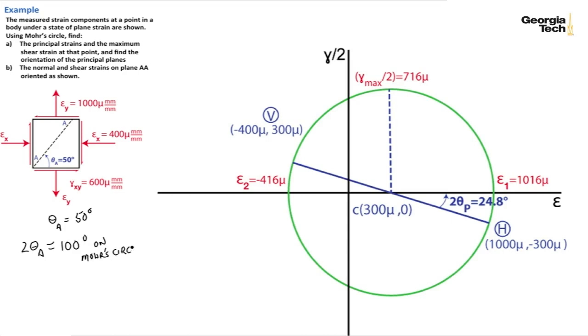If I draw that, we're going to go 100 degrees, and so we're going to end up somewhere up here. This is 2 theta sub A. Remember from last time we did this approach on Mohr's Circle for plane stress, we'll call this angle phi. We find phi equals 2 theta sub A minus 2 theta sub P, or 100 minus 24.8 degrees, which equals 75.2 degrees.